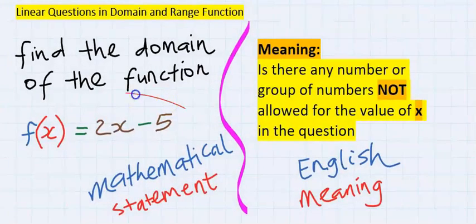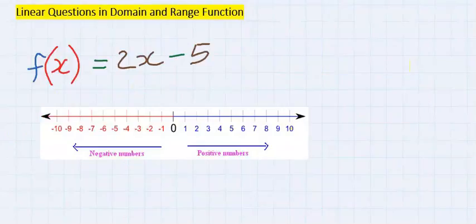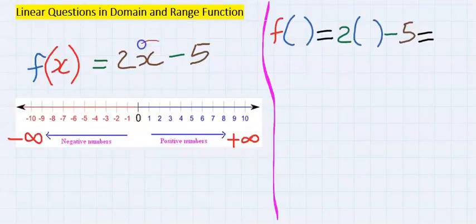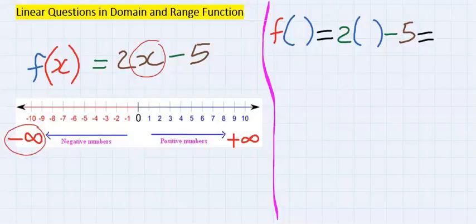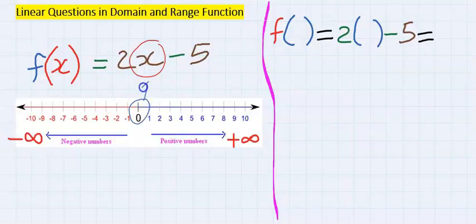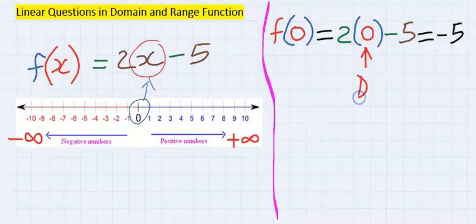Step three: to solve this problem mathematically, consider the number line with all negative integers, positive integers, and including zero. Let's try zero for x — with zero we got minus five. This means at the domain of zero, the range is minus five.